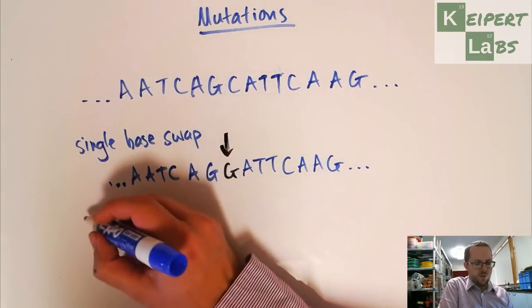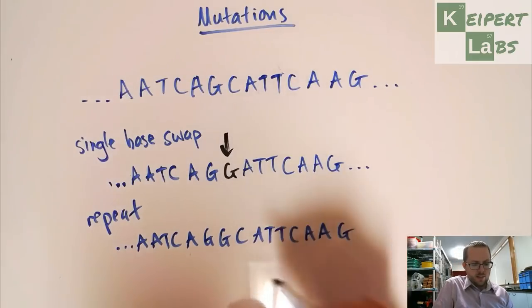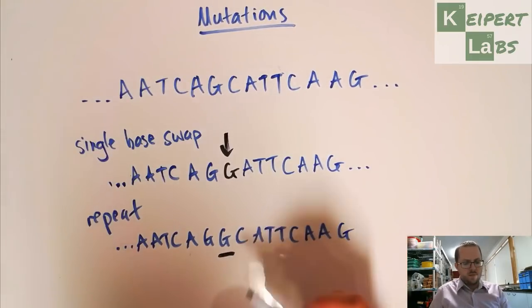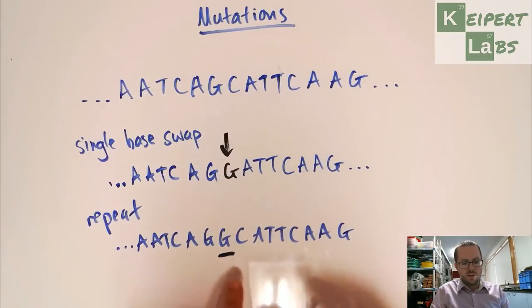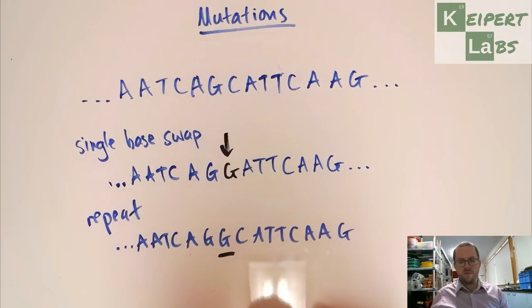We've got a repeat. So what we have here is that this G here, so this base G has been repeated twice. So the rest of the code is the same, but we've now added in an extra copy of that base.